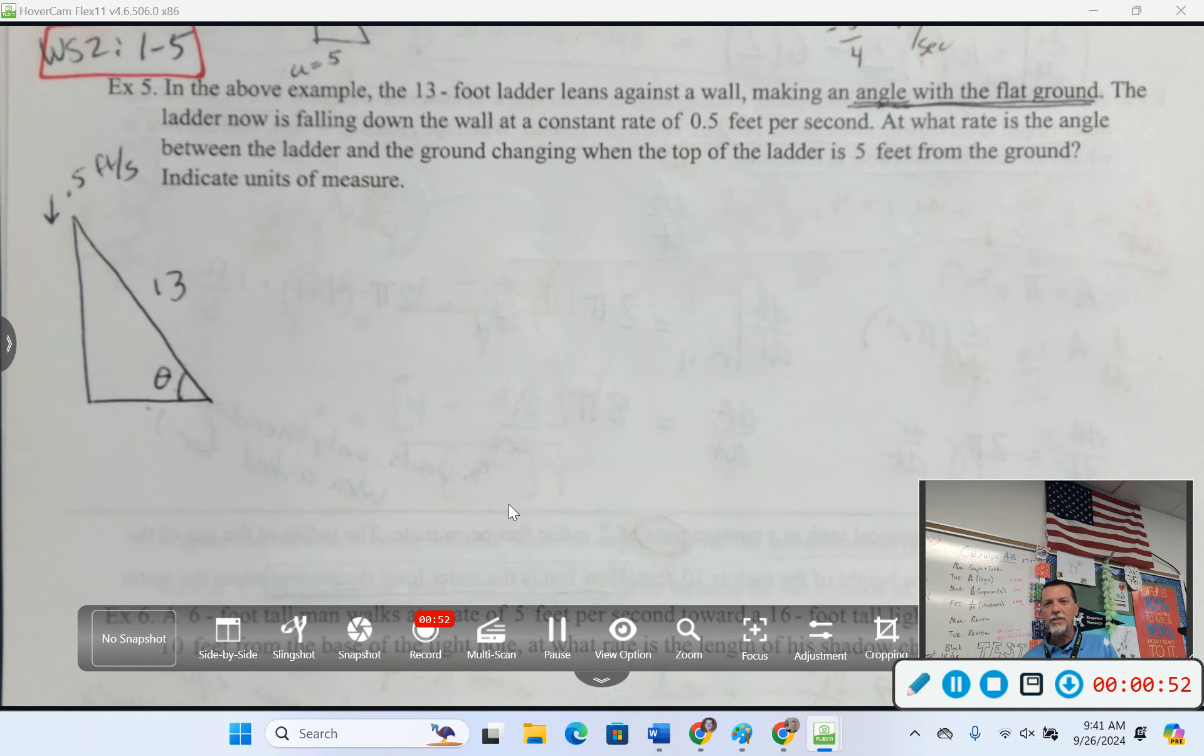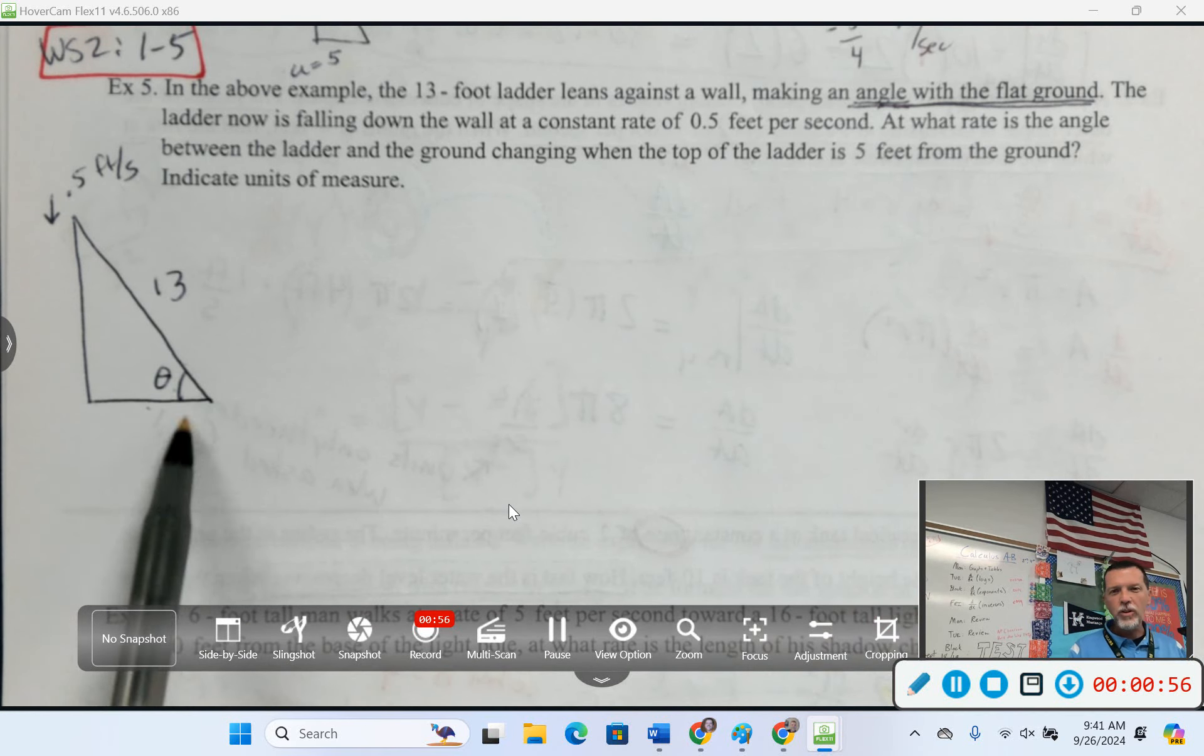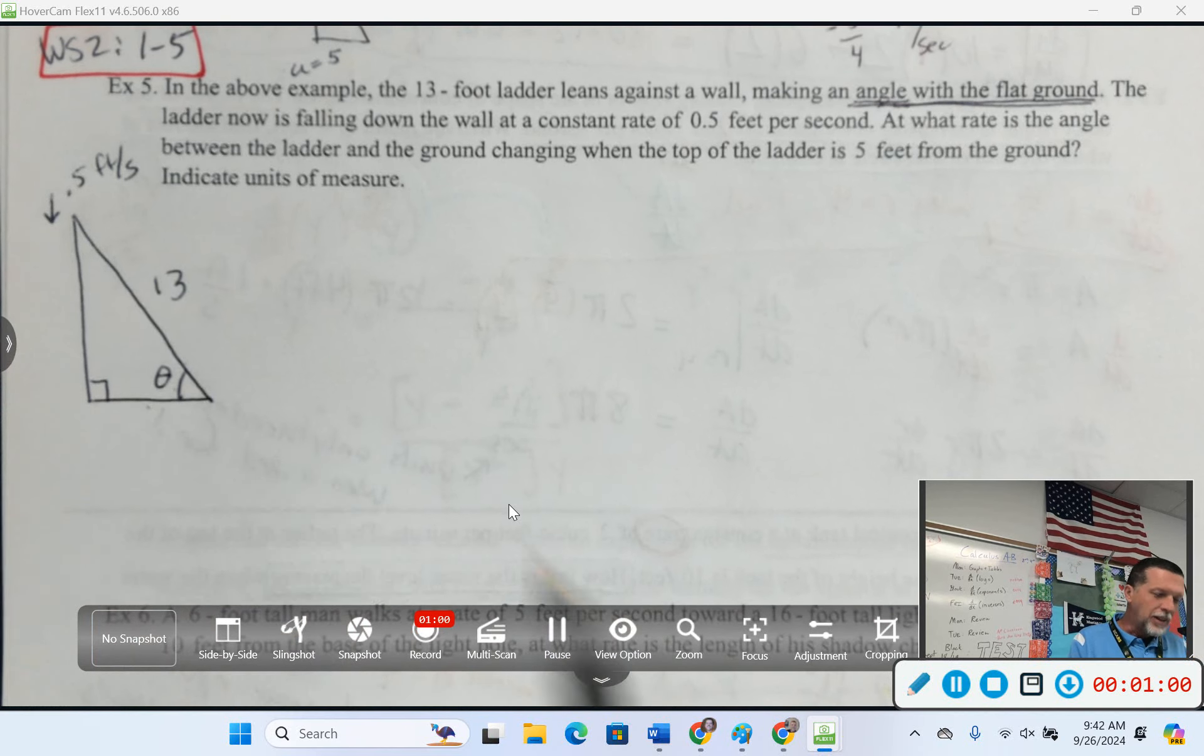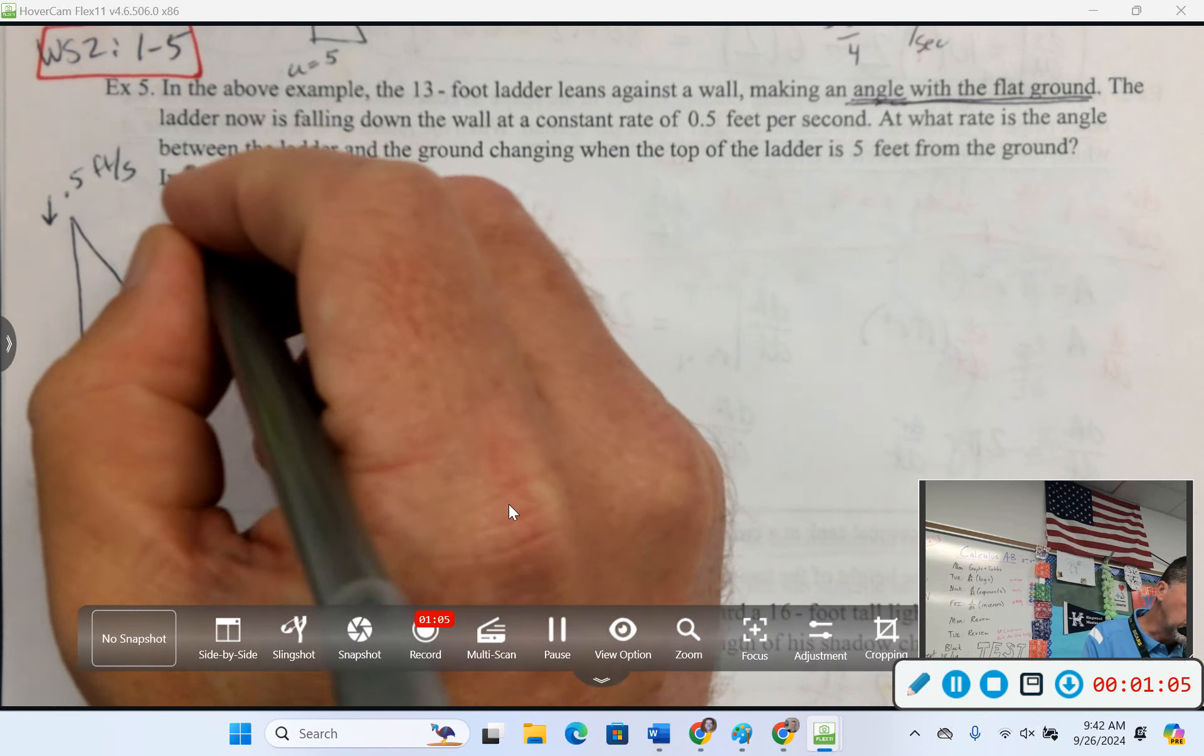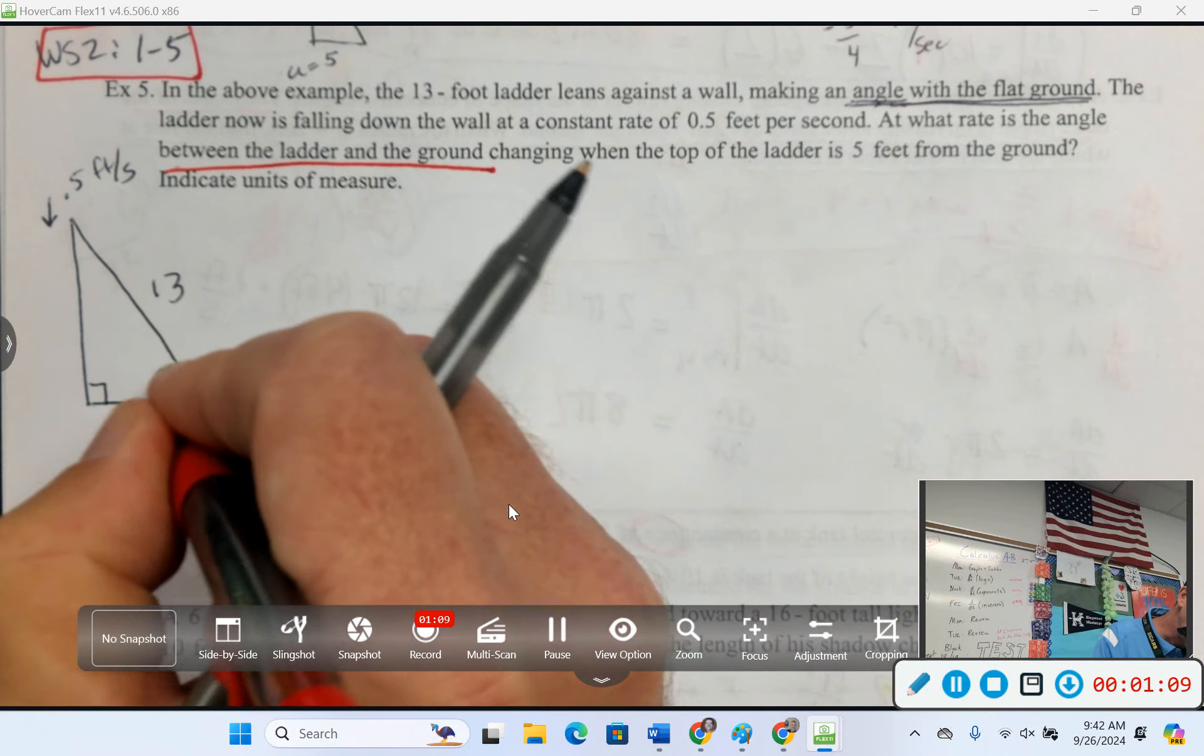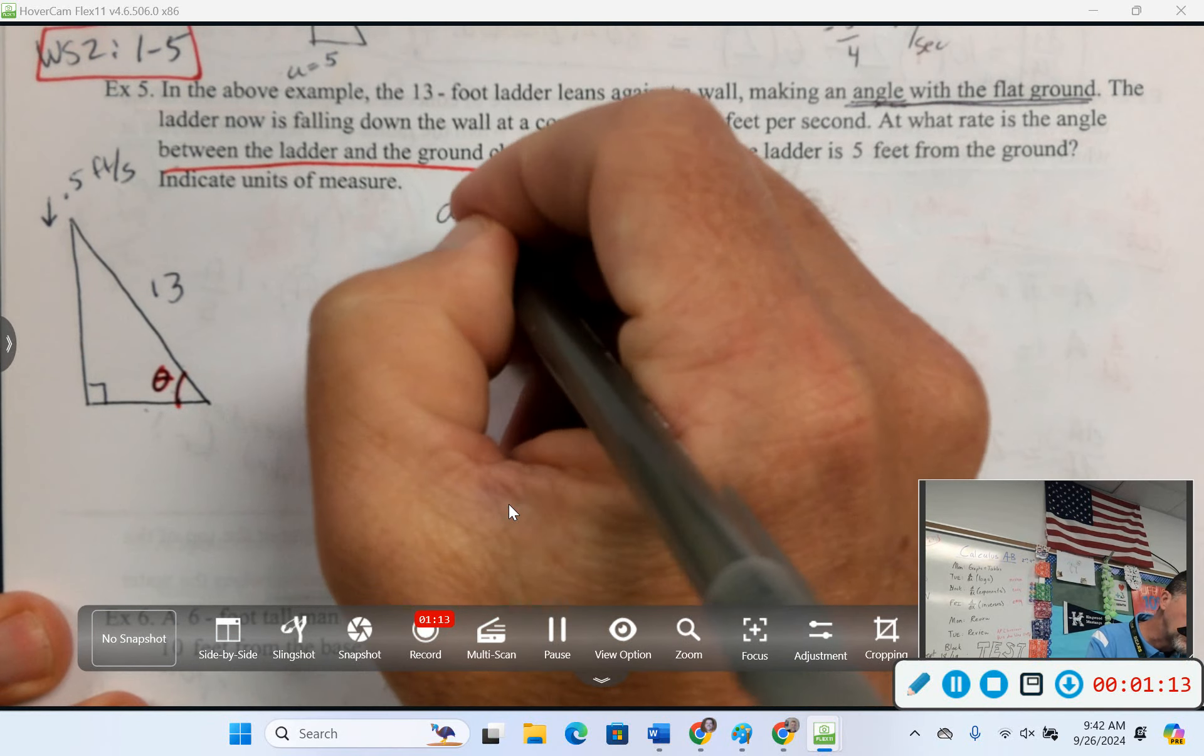Again, read the problem carefully. Don't be the person that comes up to me during the test and says, which angle do I use? And I'm going to say, read the question. It tells you which angle to use. At what rate is the angle between the ladder and the ground? That one right there. Changing. So that's, we're looking for dθ/dt.